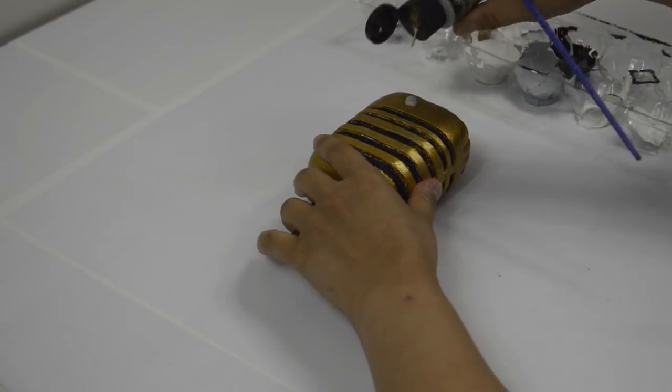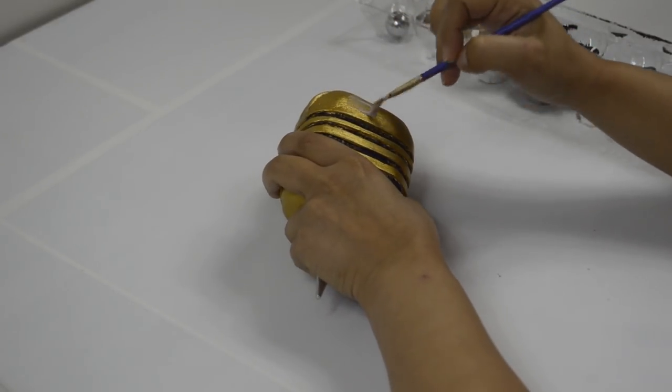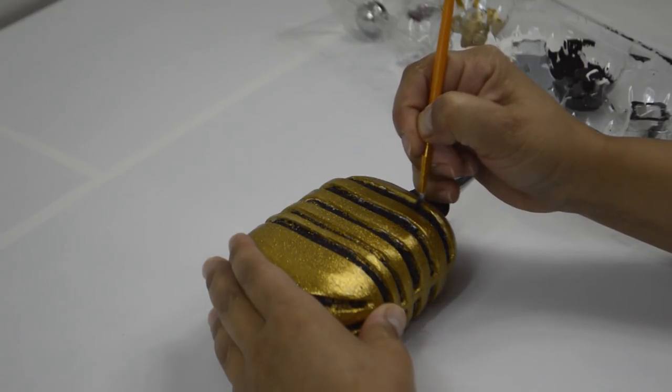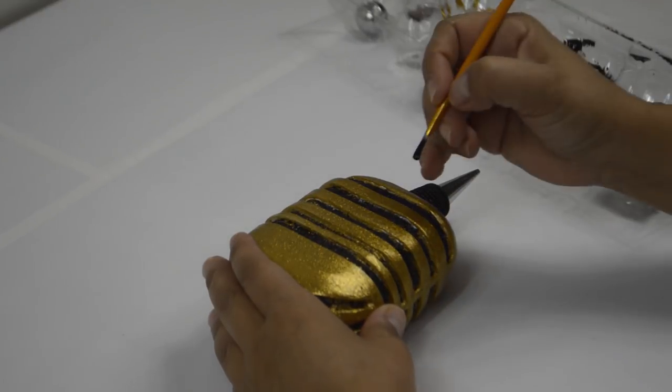Now add as many layers of gold glitter glue as you want, letting it dry first between every layer. Once that's all dry, using a thin paint brush and black acrylic paint, retouch any of the areas that got gold paint on them and let that dry.